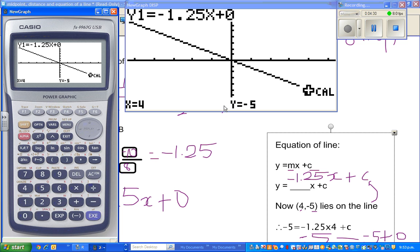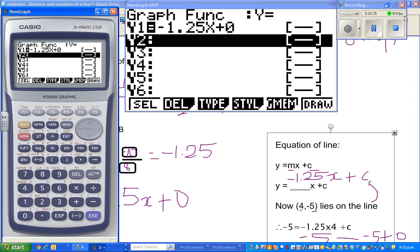When x is 4, y is negative 5. Hopefully, this has been helpful. Thank you very much. See you in the next video.